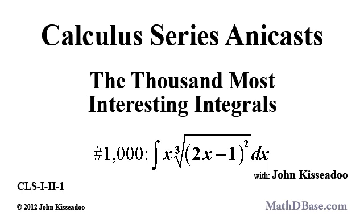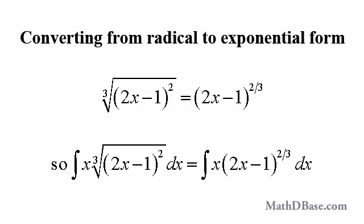So let's begin with interesting integral number 1000. First, let's rewrite the integral in exponential form, which will help us out later. So the cubed root of the quantity 2x minus 1 squared can be written 2x minus 1 to the two-thirds power.